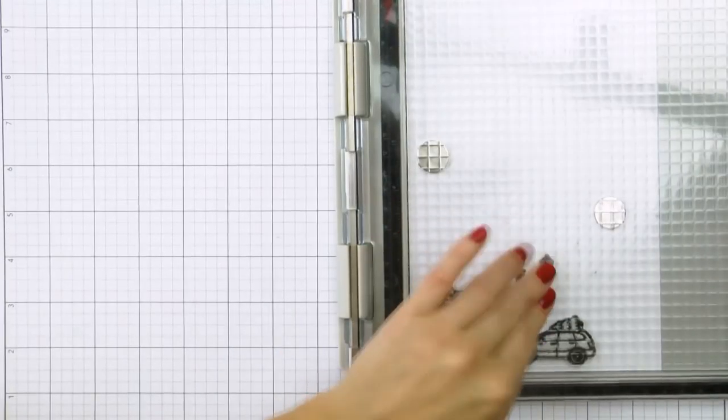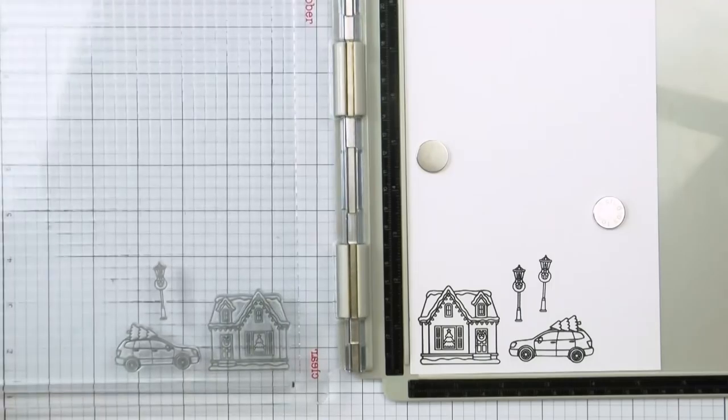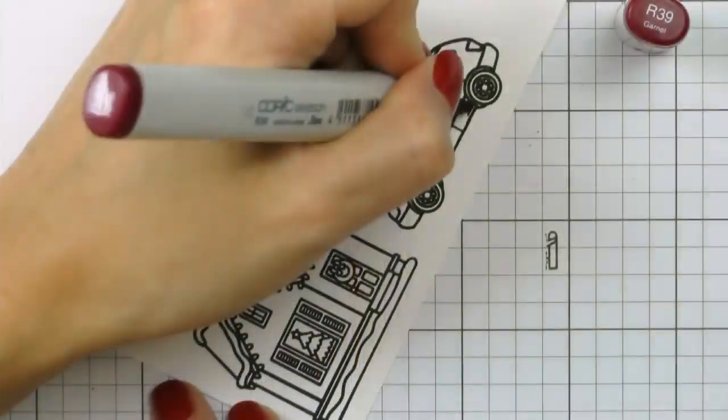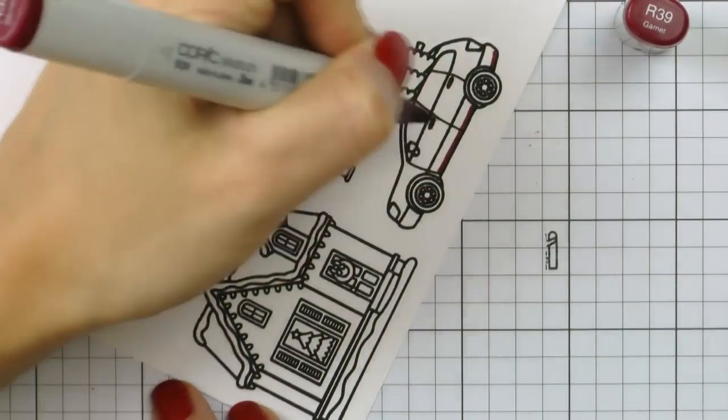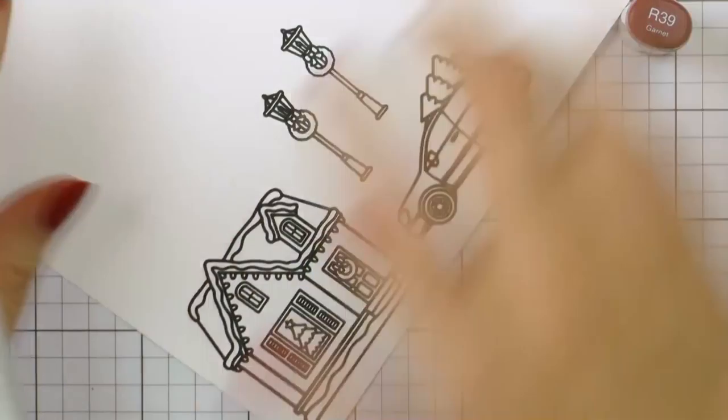I'm going to need two lampposts for my card, one on each side of the house, so I'm stamping the second one here as well. Now it's time to color. I like to use various coloring mediums for various purposes, various looks, and images.